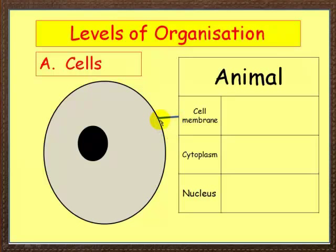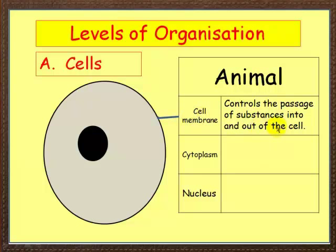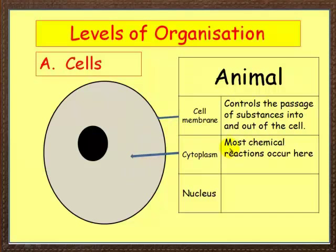On the outside, we've got a cell membrane. The cell membrane controls the passage of substances into and out of the cell. Inside, you've got the cytoplasm — it's a jelly-like substance and it's here where most chemical reactions take place. And in the middle, you've got the nucleus, which controls the activities of the cell.